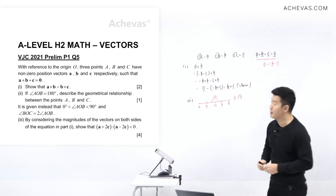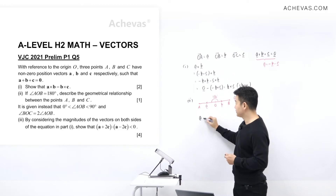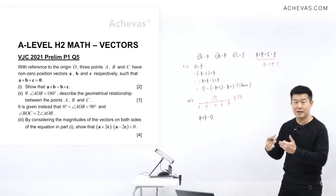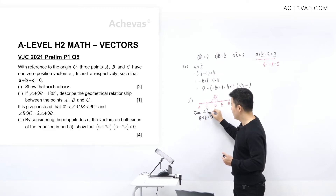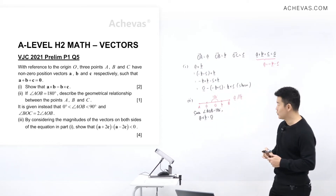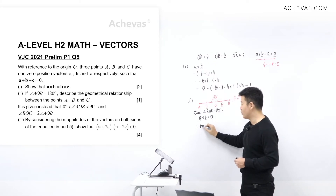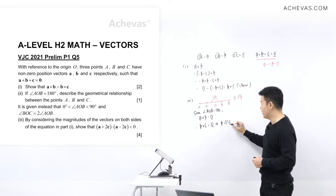If vector a is parallel to vector b, then a cross b is going to be equal to a zero vector. Since angle AOB equals 180 degrees, a cross b equals zero. And since a cross b equals b cross c from Part 1, we know that b cross c is also a zero vector. If b cross c is zero, this tells us that vector b is parallel to vector c, meaning OB is parallel to OC.